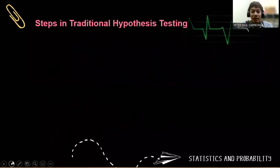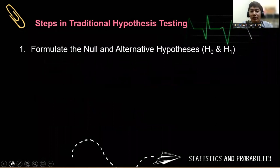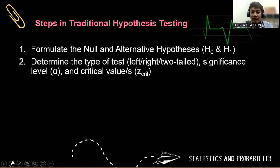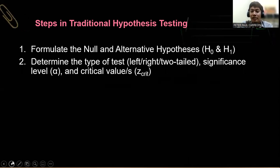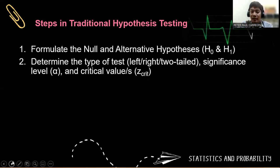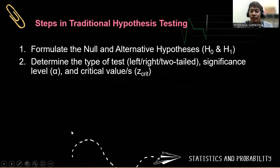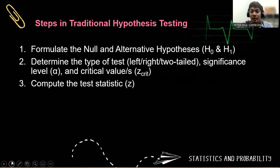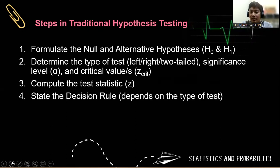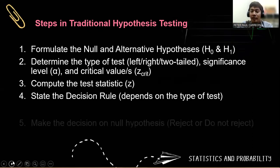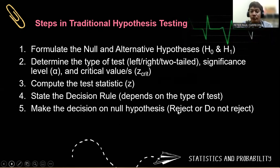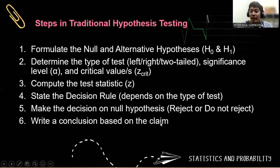The steps in traditional hypothesis testing are: Step 1, formulate the null and alternative hypothesis and determine the claim. Step 2, determine the type of test — left, right, or two-tailed — and the significance level, either alpha 0.05 or alpha 0.01, along with the corresponding critical values. Step 3, compute the test statistic using the formula. Step 4, write the decision rule. Step 5, make a decision on the null hypothesis — either reject or do not reject. Step 6, write a conclusion based on the claim.